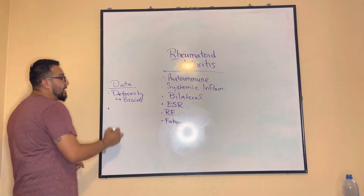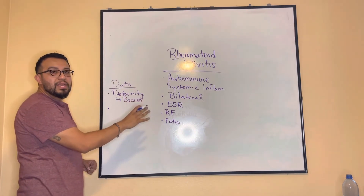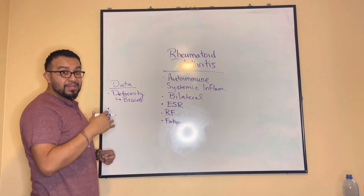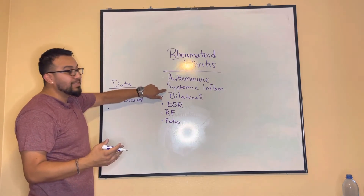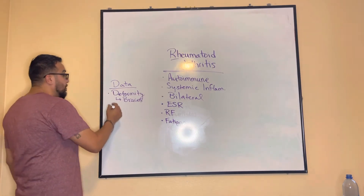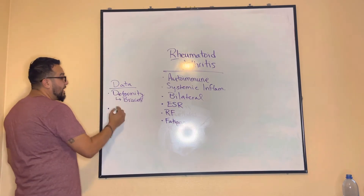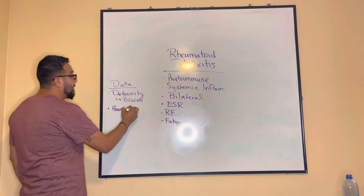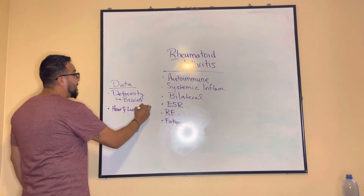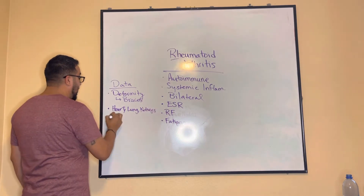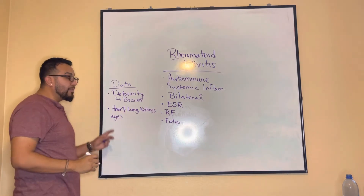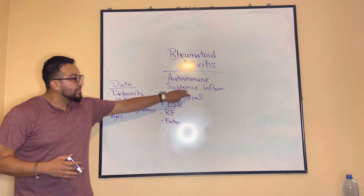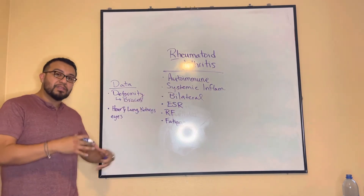Rheumatoid arthritis is not specifically affecting the joints — it can affect other tissues as well, which is why it's a systemic inflammatory issue. RA also affects the heart — specifically the covering of the heart — the lungs, the kidneys, and the eyes. We have to continuously monitor the function of the kidneys, lungs, heart, and eyes because of this systemic inflammatory condition.